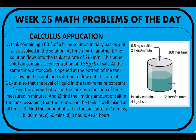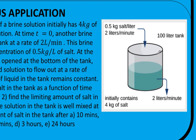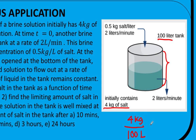Let's analyze this problem. What we have here is a tank, and the tank contains 100 liters of brine solution. Initially, this tank contains 4 kilograms of salt. So the amount of salt in the tank initially is 4 kilograms out of the 100-liter solution. In other words, there are 0.04 kilograms of salt per liter of this liquid.